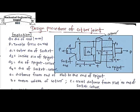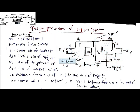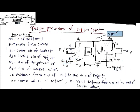The cotter joint has three basic components: one is the socket, another one is the spigot rod, and one major component is the cotter.